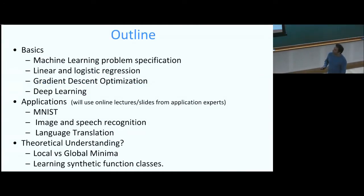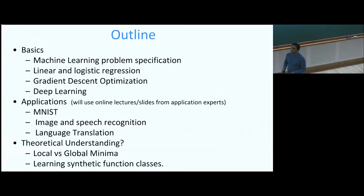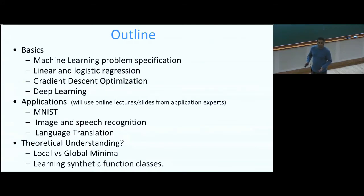This is the outline of the tutorial. I will go over the basics of machine learning, starting with simple methods like linear and logistic regression, and how gradient descent is used to optimize the parameters. Then I'll go on to deep learning. From there, I'll briefly cover applications: handwritten digit recognition (MNIST), speech and image recognition, and maybe language translation. After that, I'll move on to theoretical issues such as local versus global minima and learning a synthetic class of functions via deep learning.